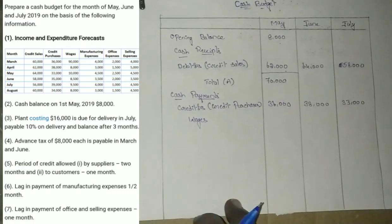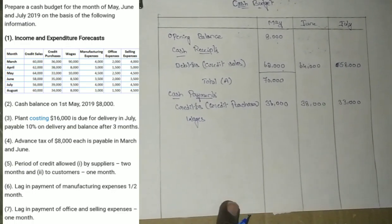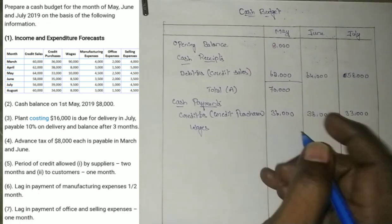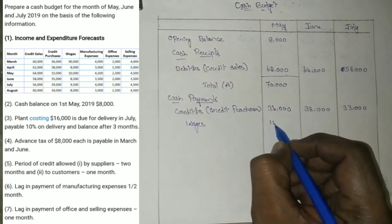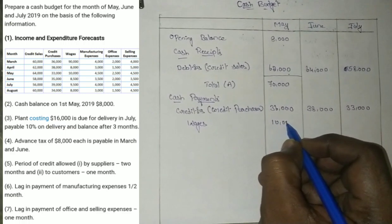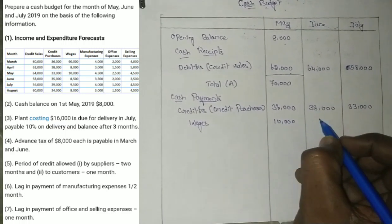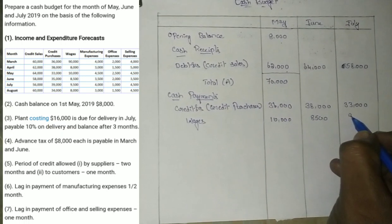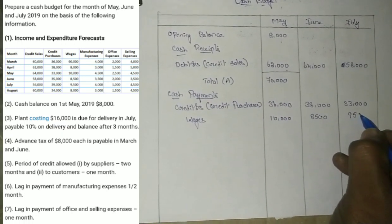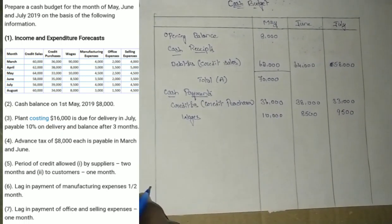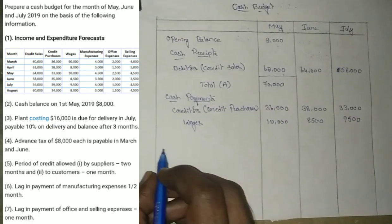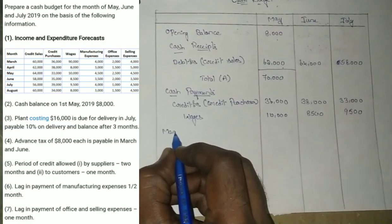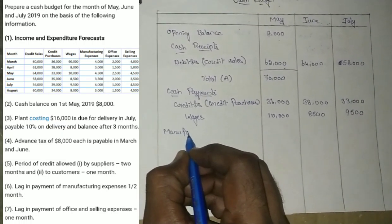Next are wages. No adjustment condition is given for wages in the additional information, so we directly record the wages. Wages for May are 10,000 and for June are 8,500.